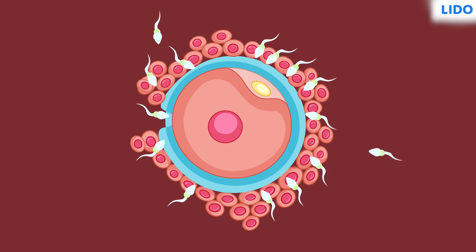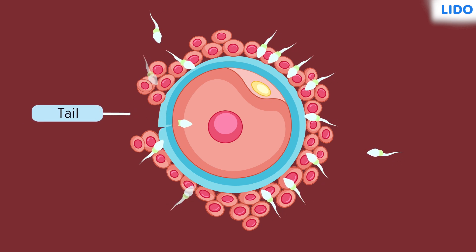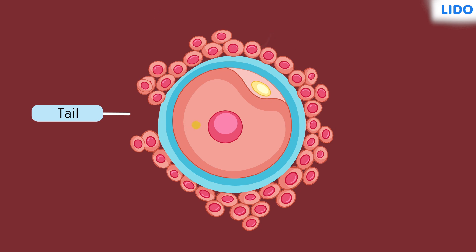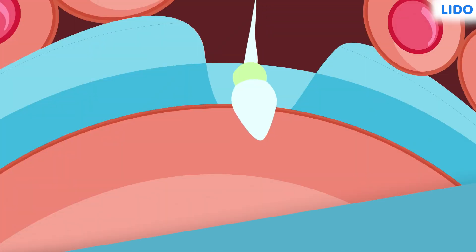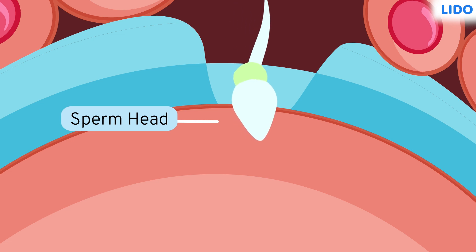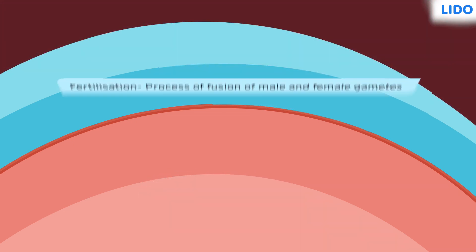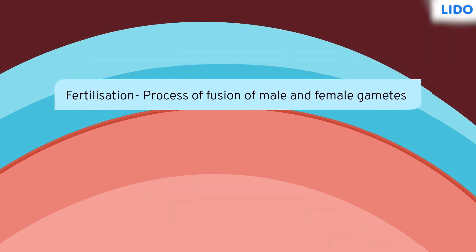After reaching the ovum, the tail of the sperm is left behind. Only the nucleus of the sperm head can penetrate the cytoplasm of the ovum and fuse with the egg nucleus within it. This moment of fusion of the nuclei of sperm and ovum is called fertilization.